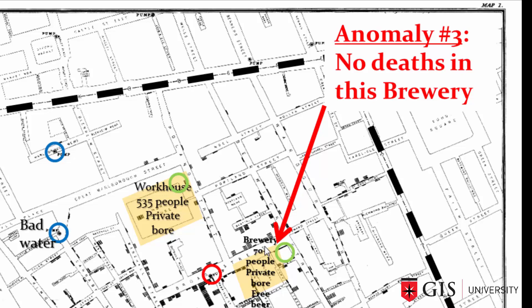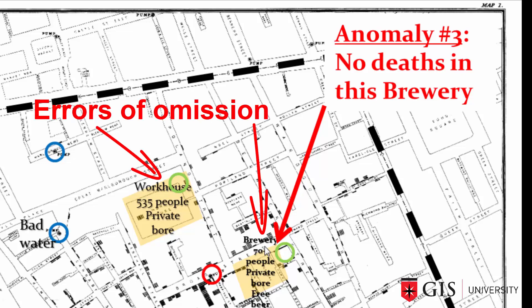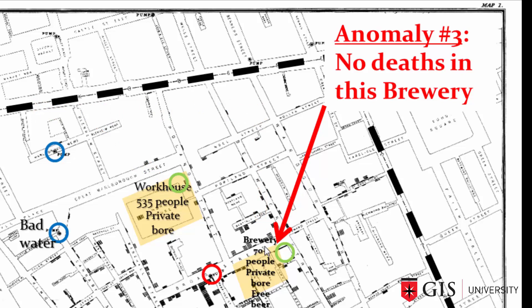Between these last two anomalies, there's a really important GIS data quality parallel. The two wells that were critical to John Snow's analysis were wells that had not been mapped. GIS databases also suffer from these types of errors, known as errors of omission. So when using GIS maps, for themes that are really important to your analyses, double check that they're complete.